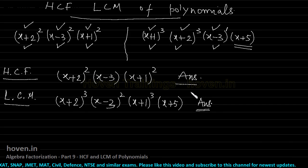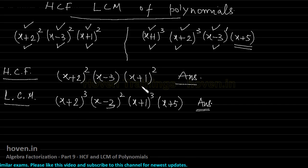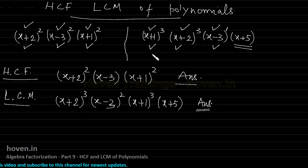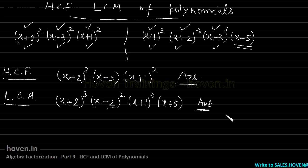To compare: in the case of HCF we take the smaller power, and in the case of LCM we take the higher power. In HCF we ignore all those terms which do not appear on both sides. In LCM we include all those terms which appear on either side. I will now take another example to help understand HCF and LCM better.